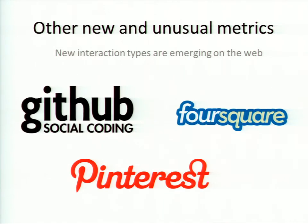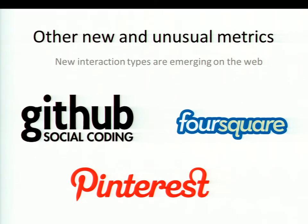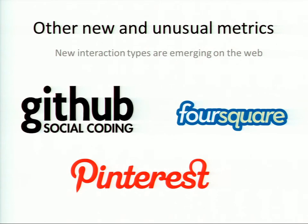The web is this amazing creative place where new interaction formats are emerging all the time. GitHub has this concept of forking, where you can fork someone's codebase and tweak it in your own direction — standing on the shoulders of giants but literally using that codebase. Foursquare has checking in, Pinterest has repinning. I'm pretty confident that as academic activity moves online, new interaction formats will emerge, and those will give rise to new peer review metrics.